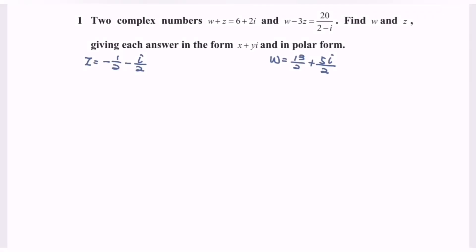Now we express z and w in polar form. For z, with value negative 1 over 2 minus i over 2, both the real and imaginary parts are negative, so the location of z is in the third quadrant. The basic angle alpha will be found from the magnitudes.